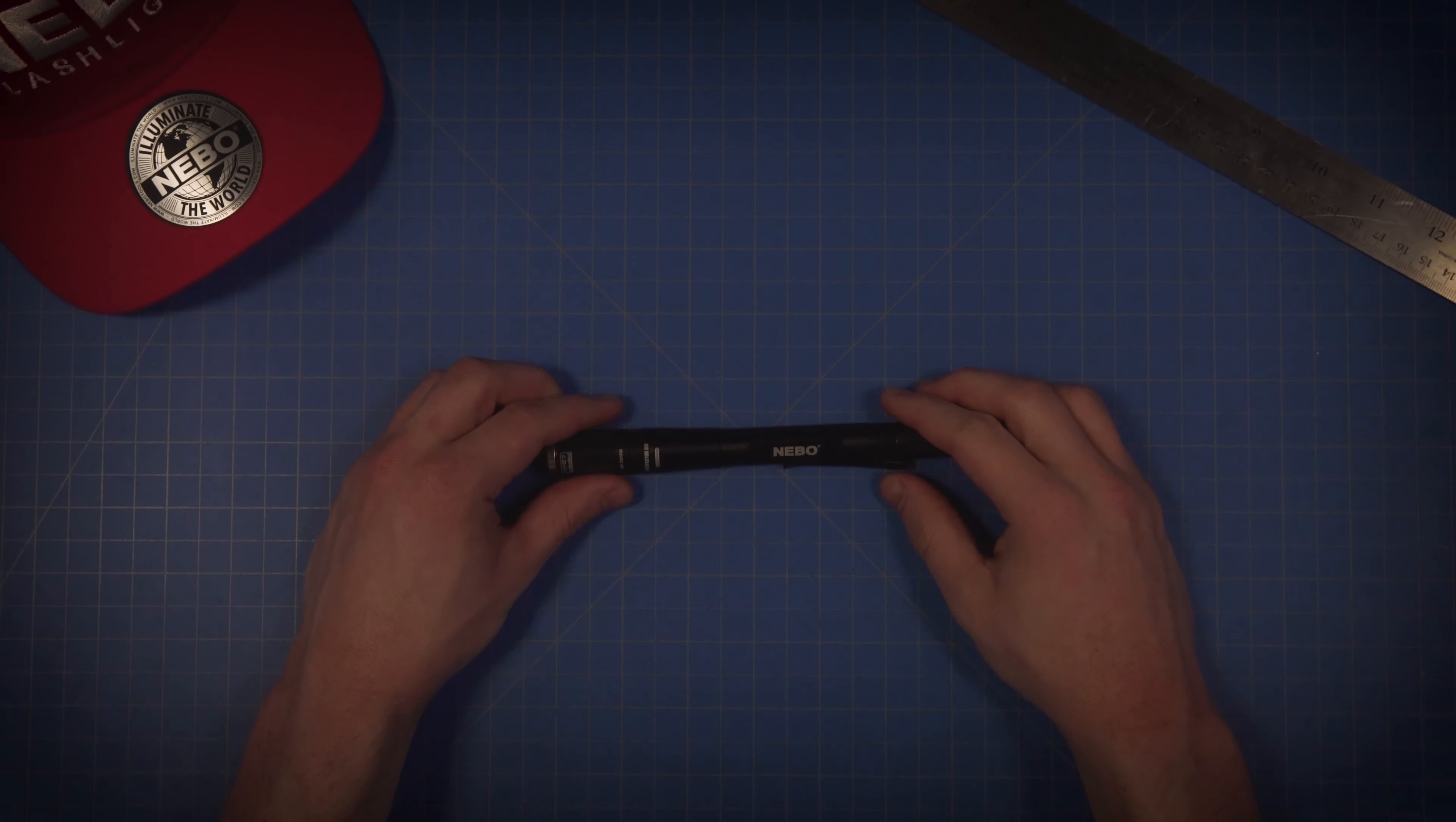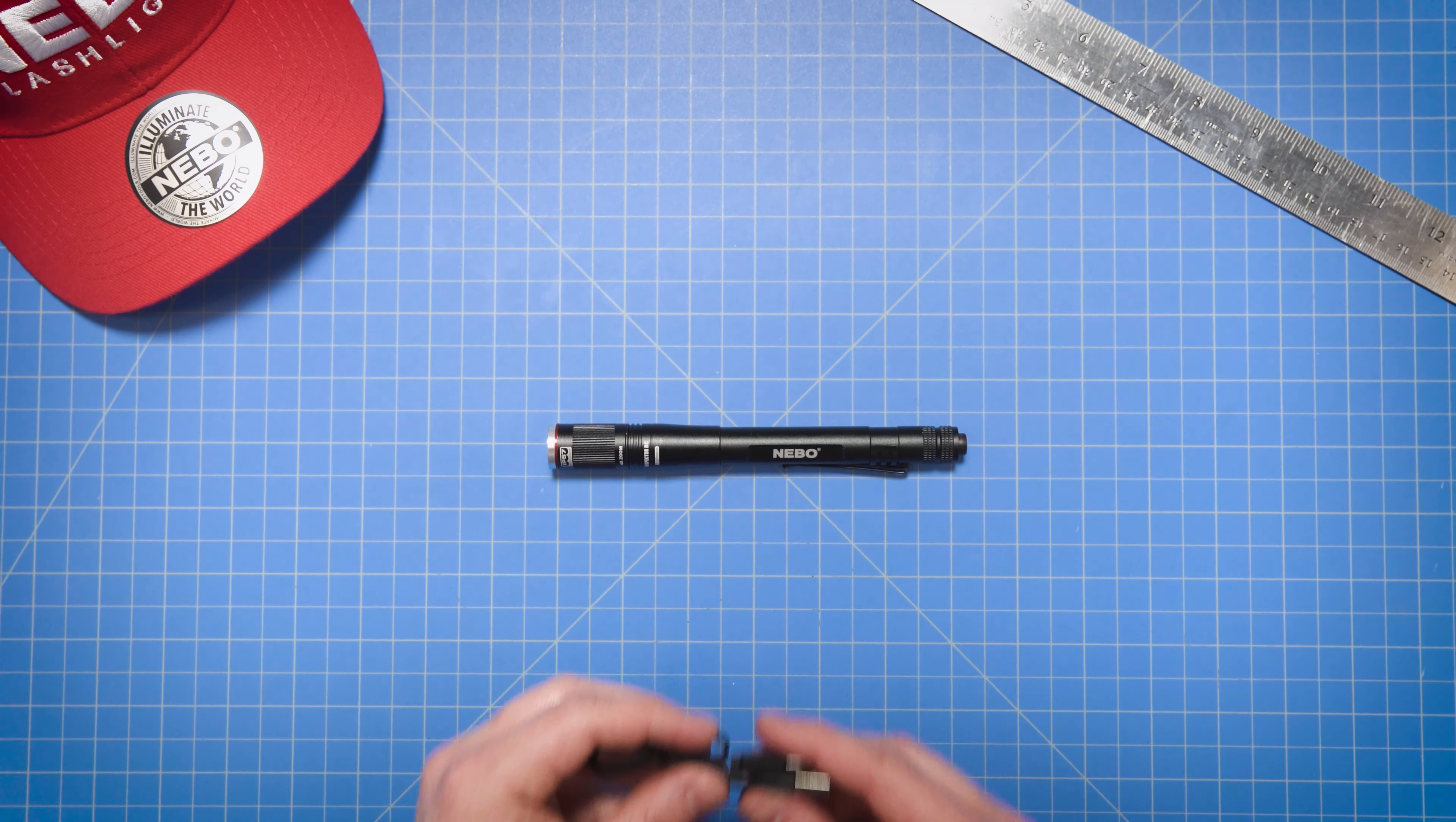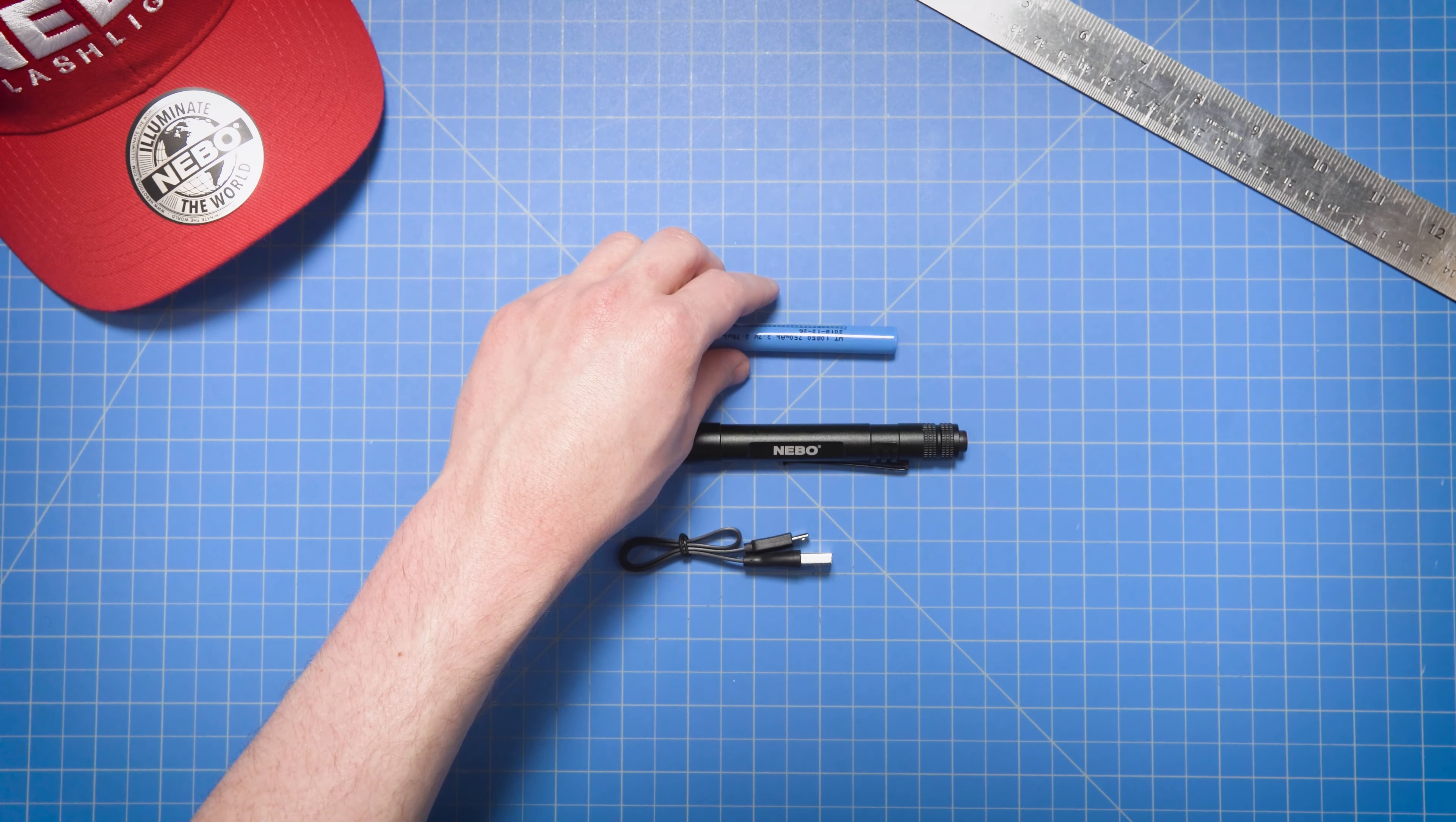The Inspector RC is a simple, yet incredibly useful inspection light that'll fit perfectly in your shirt pocket. Well, that'll do it for this episode of Nebo Unboxed. As always, it's been a pleasure, I'm Zach, and we'll see you next time.